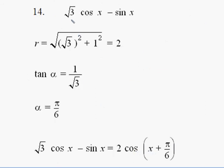So similarly, we go through and do the same. Take our A value, B is one, gives us two, and inverse tan of one on root three is π on six. So we can write that statement as two cos(x + π/6).